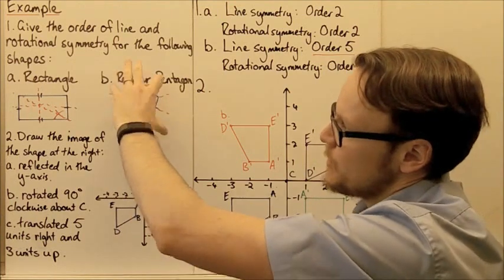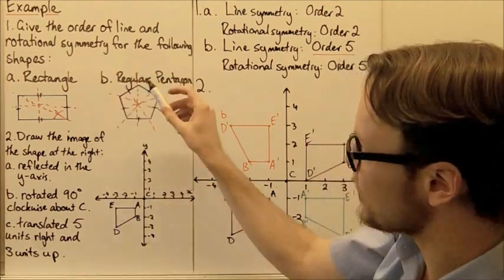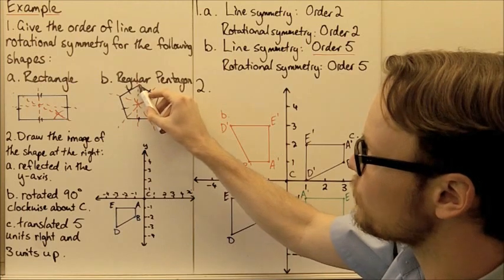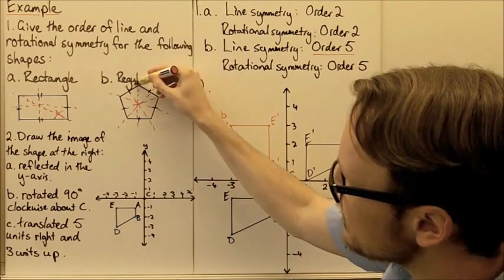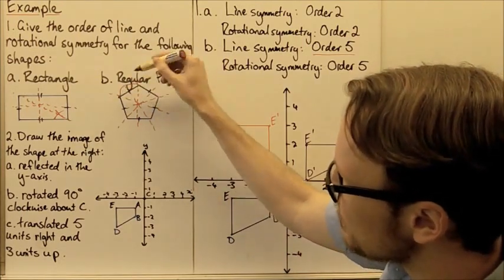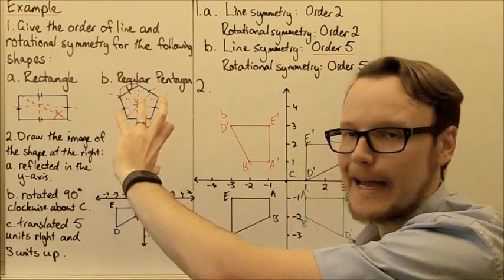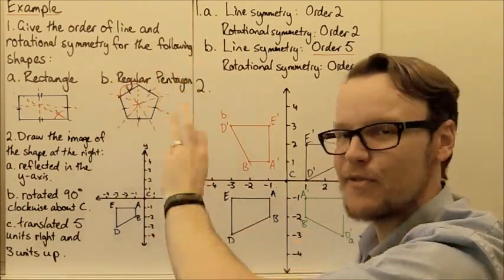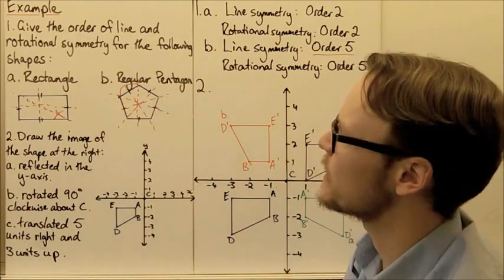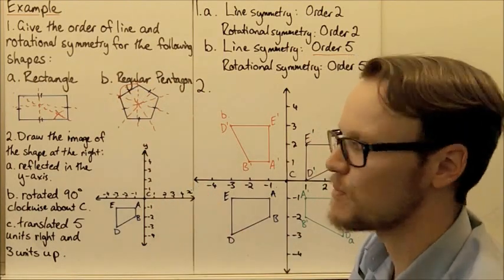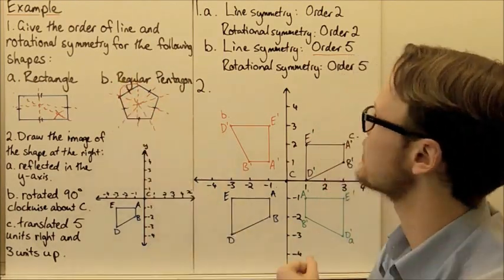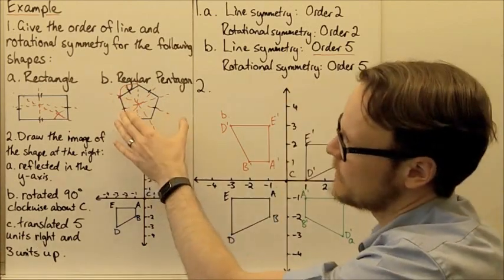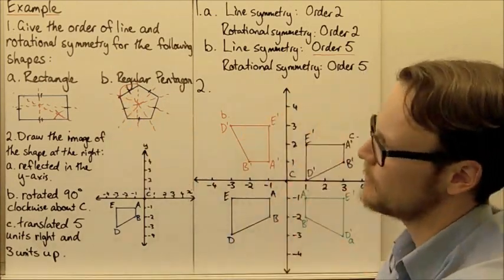As we rotate through, if we rotate one-fifth of a full rotation, this point here will be at this location and it will be matching again. There'll be five different ways we can get it to fit exactly as we rotate through 360 degrees. So the rotational symmetry for our regular pentagon is also five.